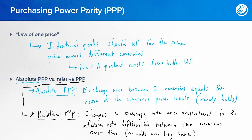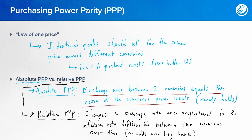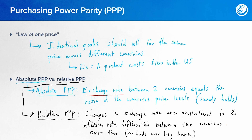We have two versions of PPP. The first is absolute PPP, and the second is relative PPP. Absolute PPP is a theory that states that the exchange rate between two countries should equal the ratio of the countries' price levels, assuming there are no transaction costs or trade barriers. This rarely holds because it doesn't account for the frictions associated with transaction costs and trade barriers.